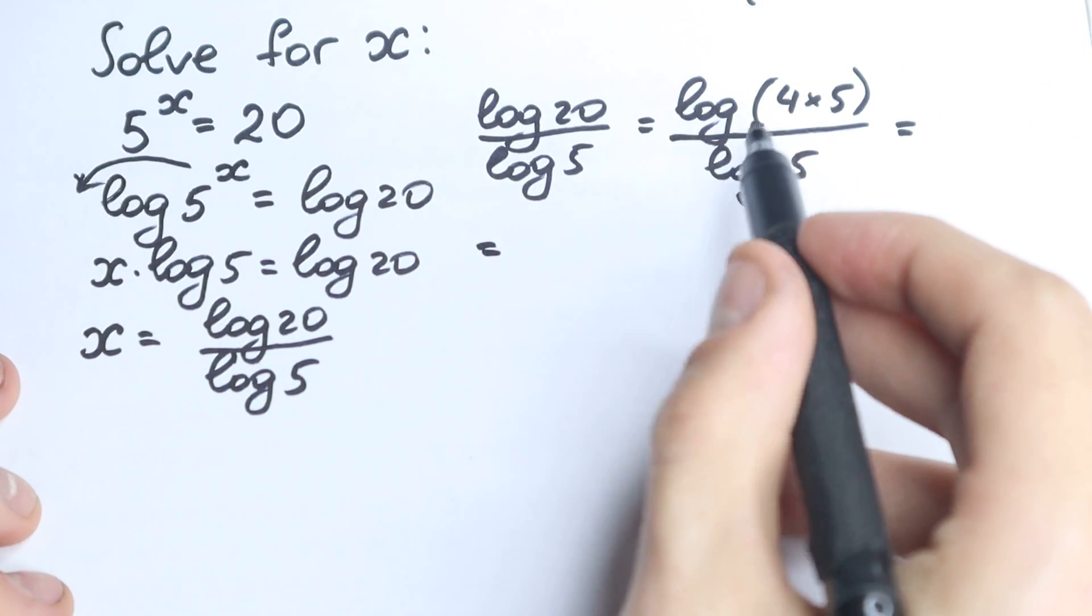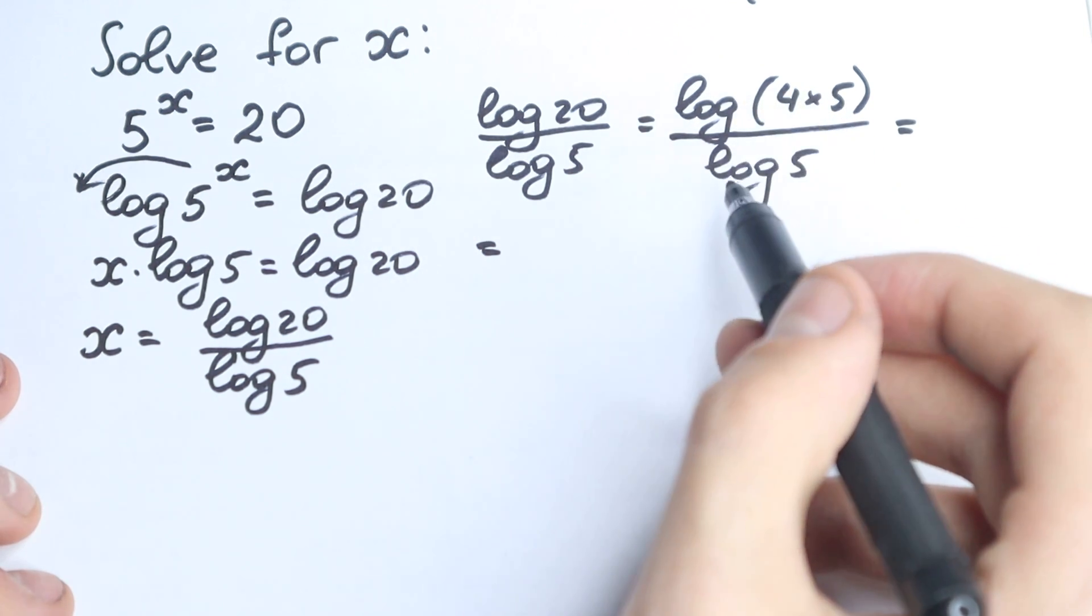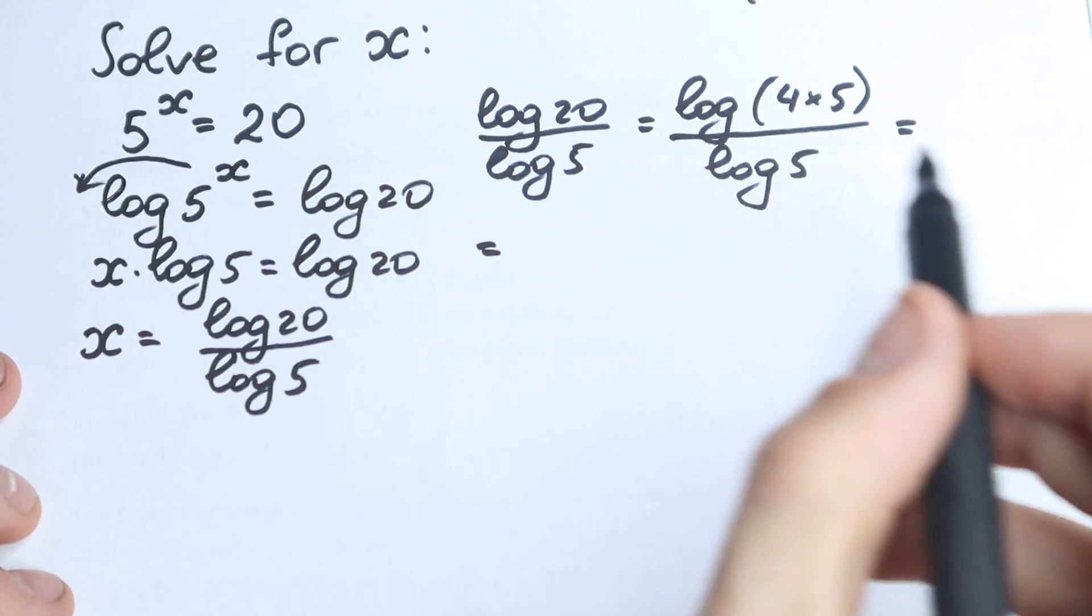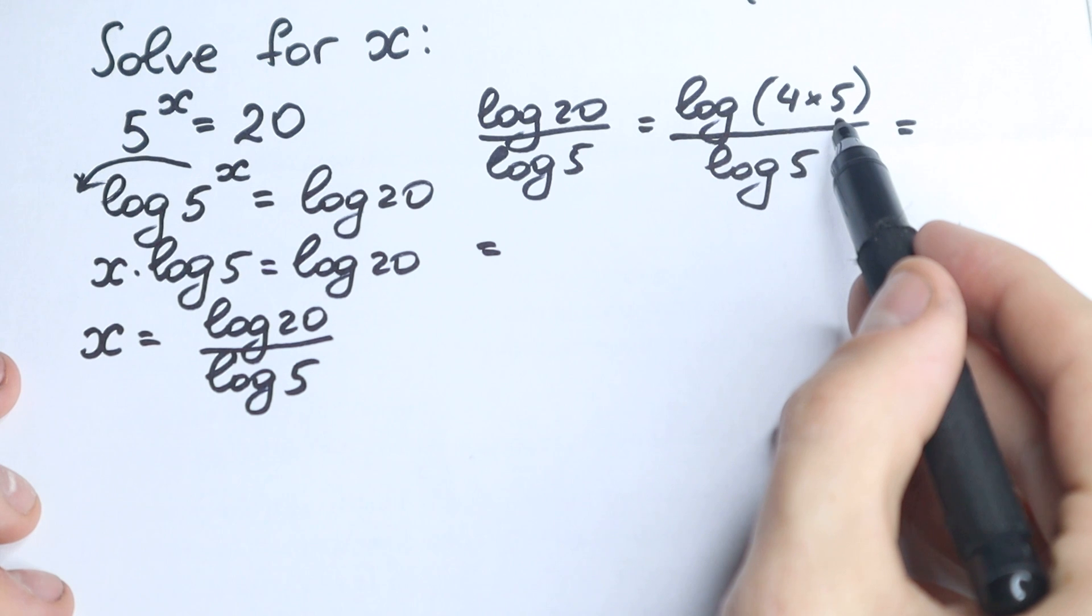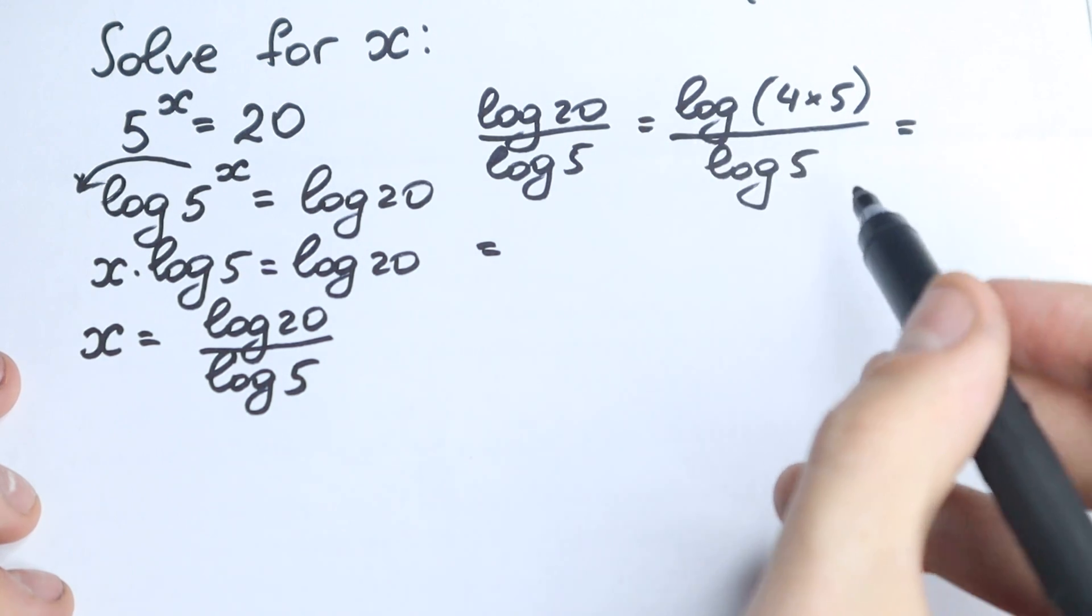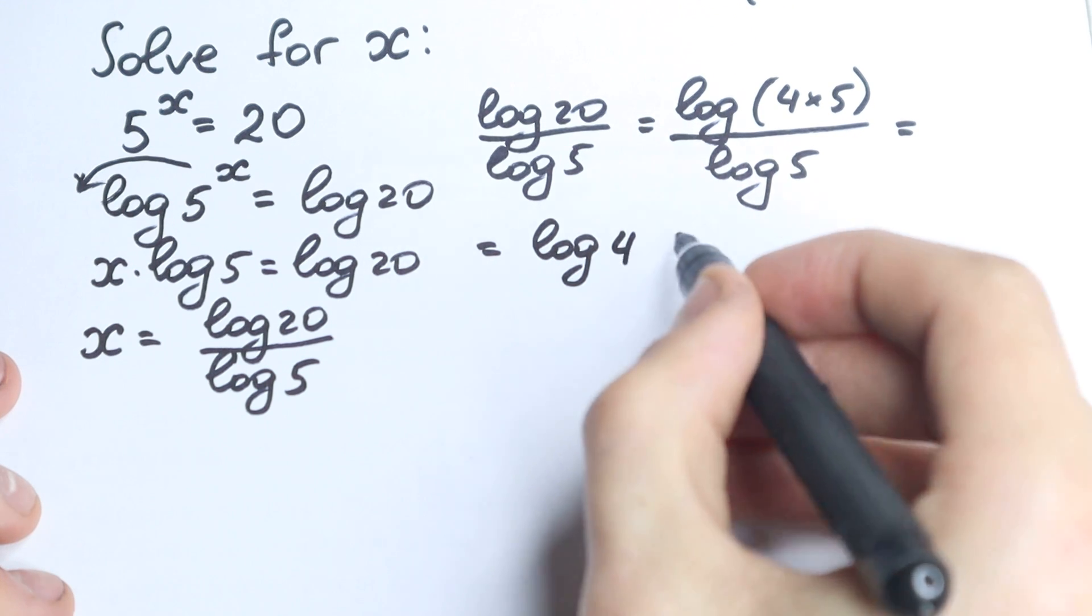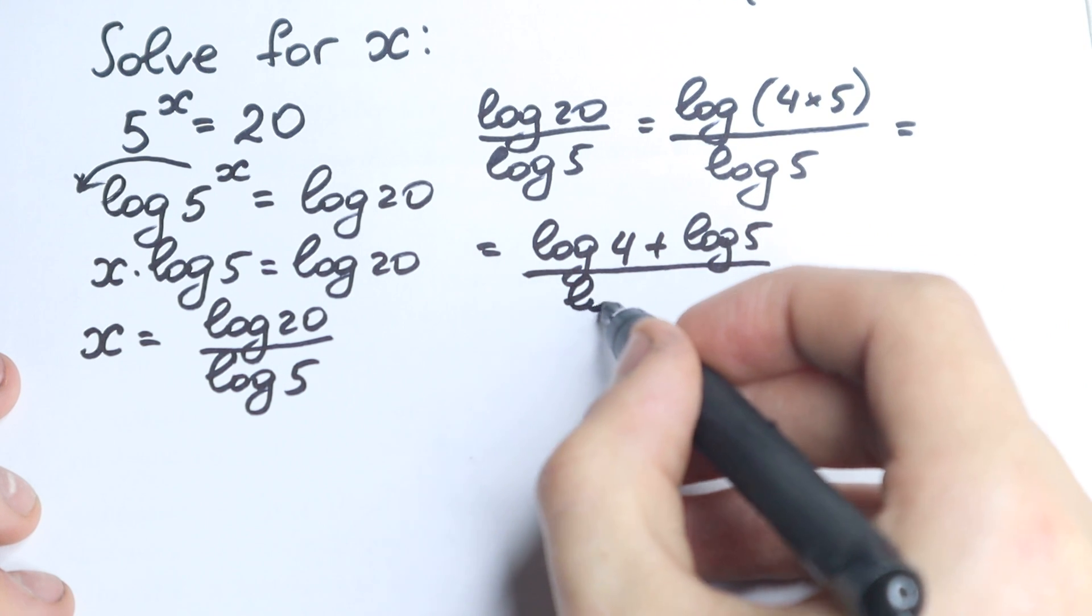Right here we have a log of a product of two numbers. If you know a little bit about log properties, we can write it as sum of two logs. This is a log property: if we have multiplication we work with addition, and if we have division we work with subtraction. So we have log 4 plus log 5 all over log 5.